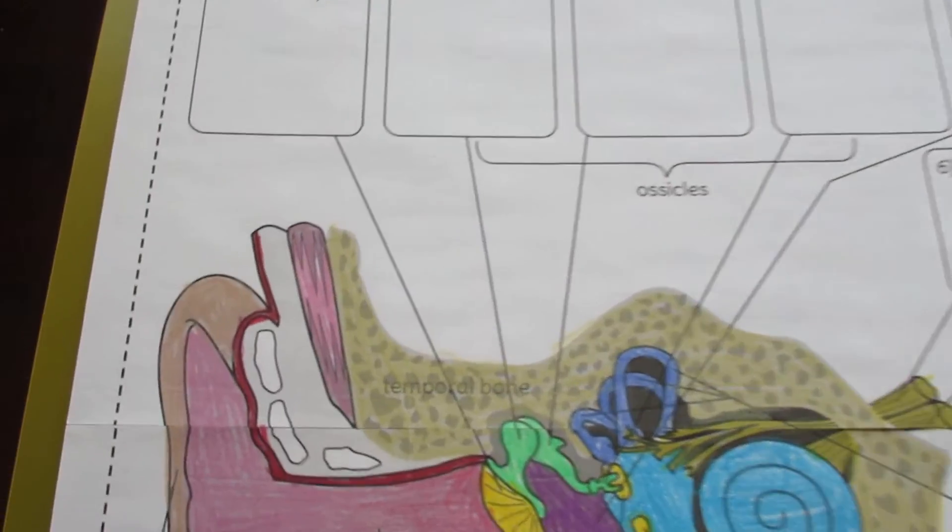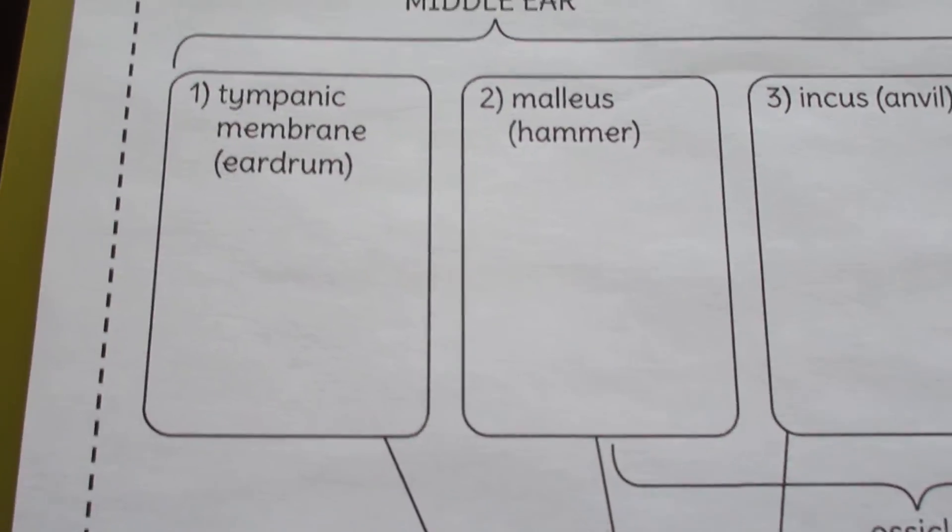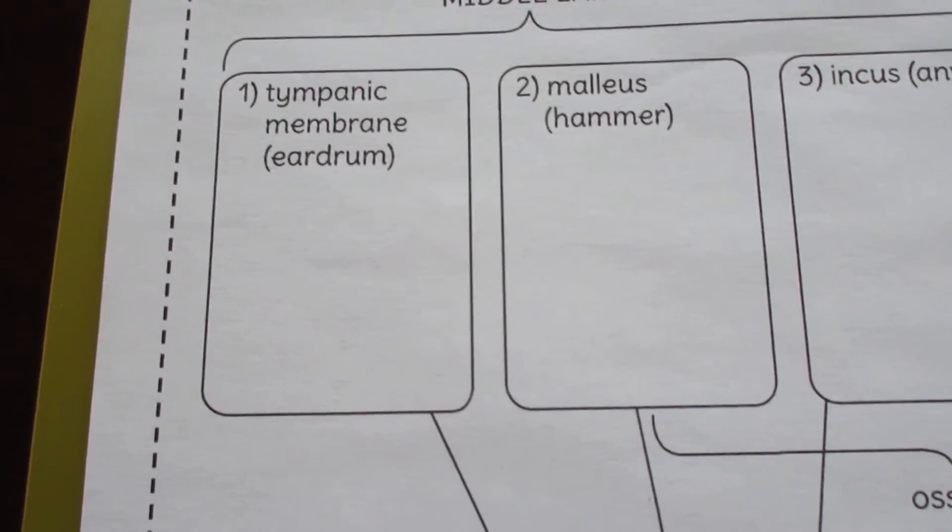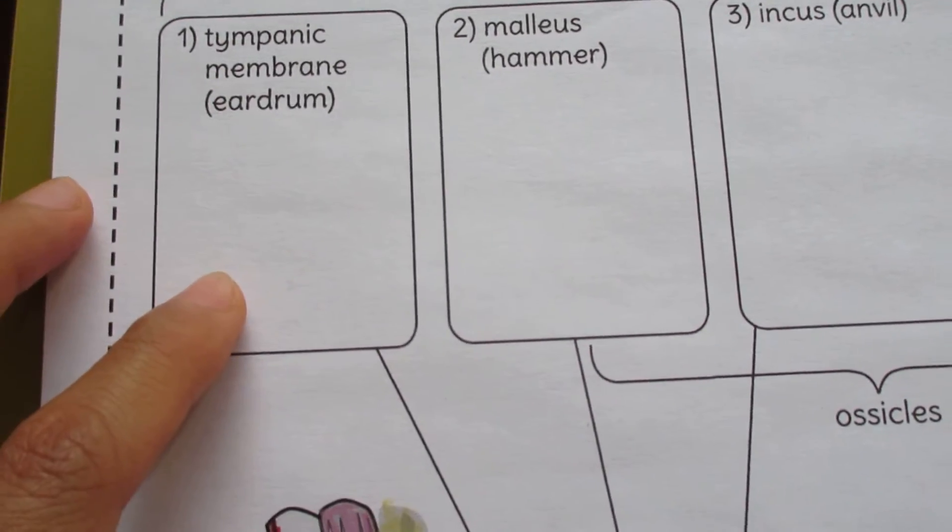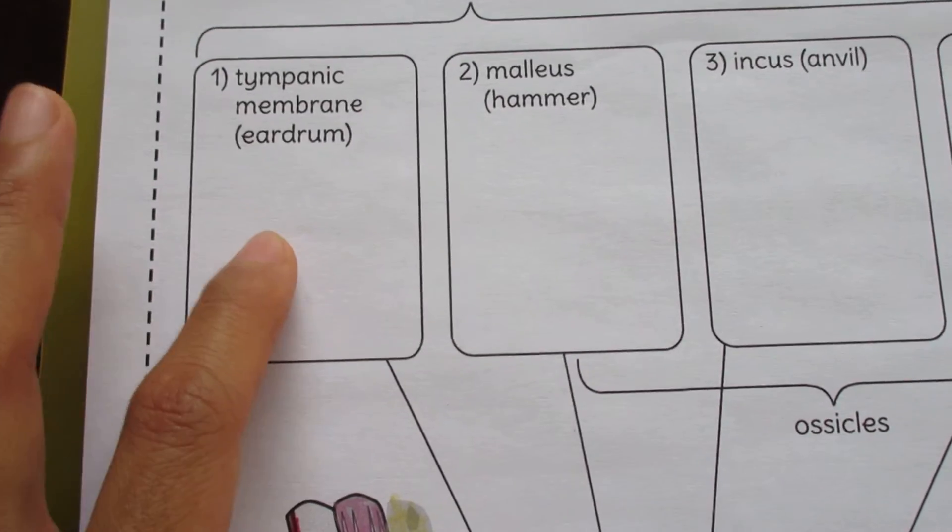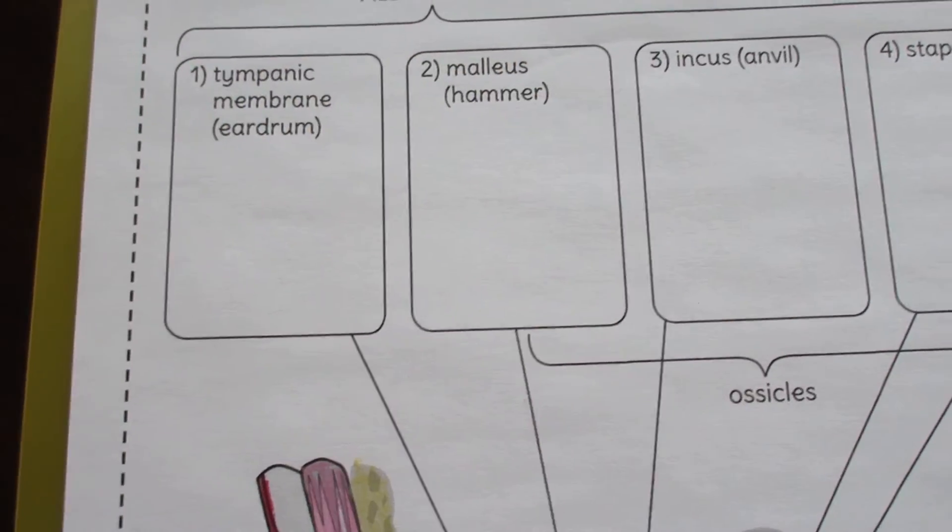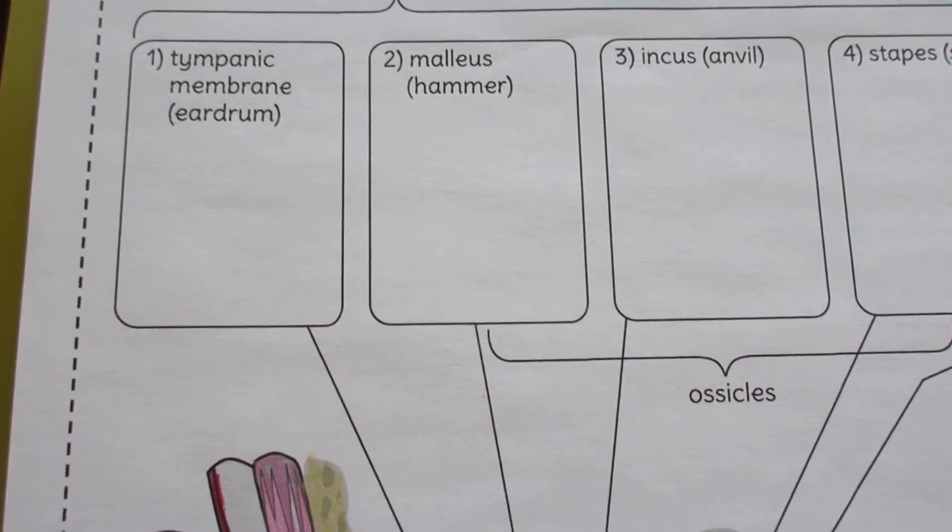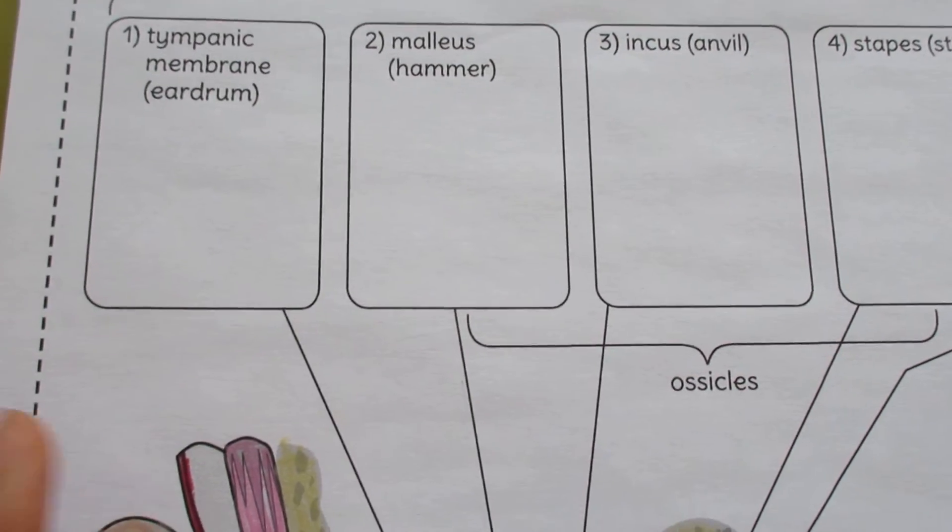Each structure is connected to a numbered description box and labels are also provided. This allows you to go step by step through the lesson. You can talk about part number one, two, three, and you can reference each number or label as you go along so the students can always find their place.